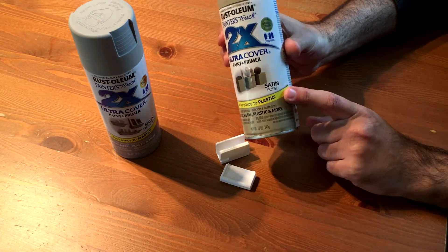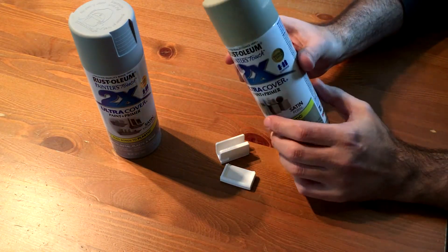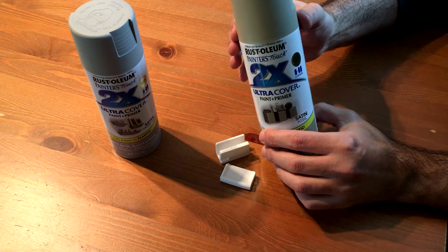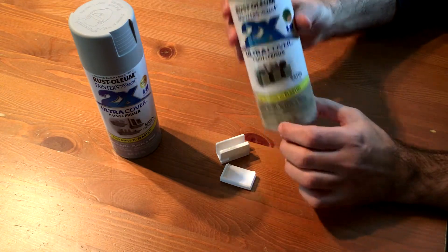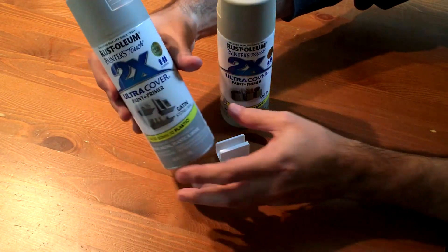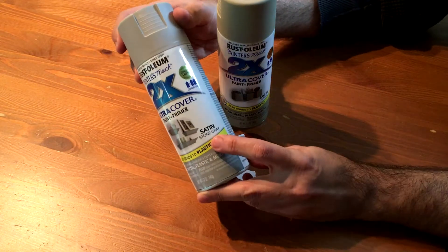I use two colors here: this is Satin Fossil, which is that kind of putty color, which is good for, you know, if you take old electronics and let them sit around for a long time, that's the color they take. And then if I want to show something that looks kind of newer, I've got the Satin Stone Grey.